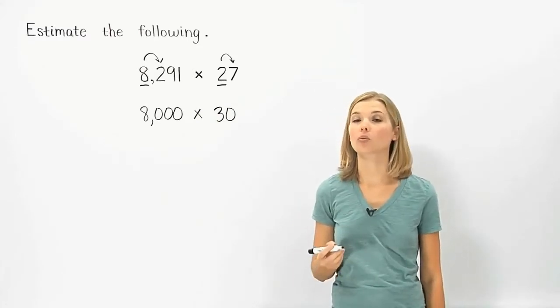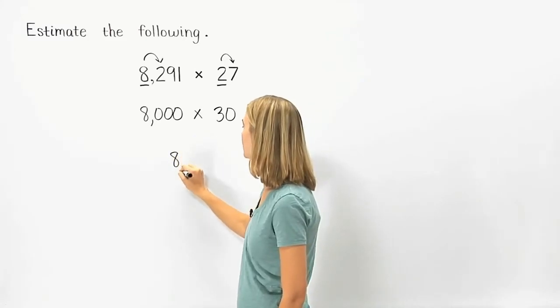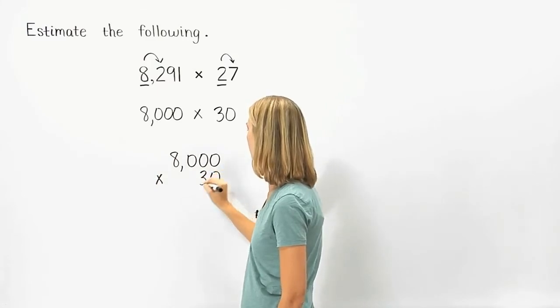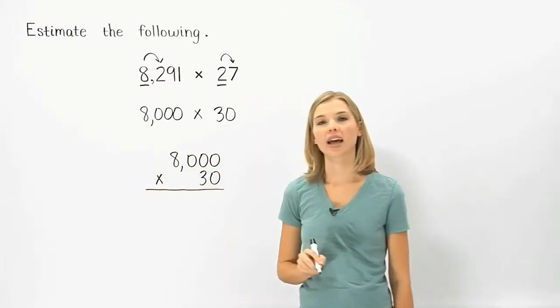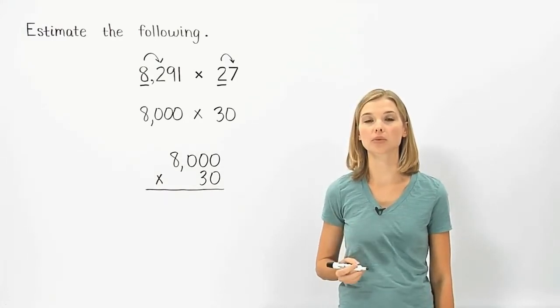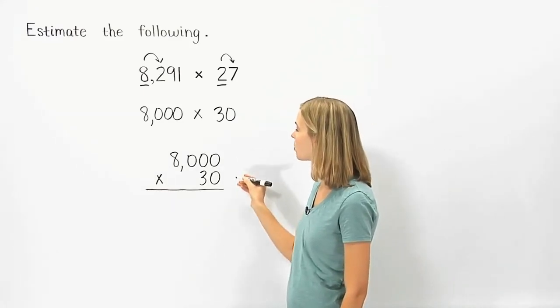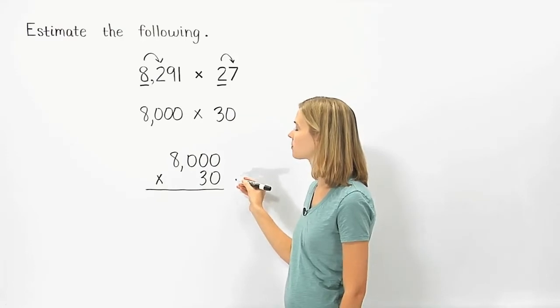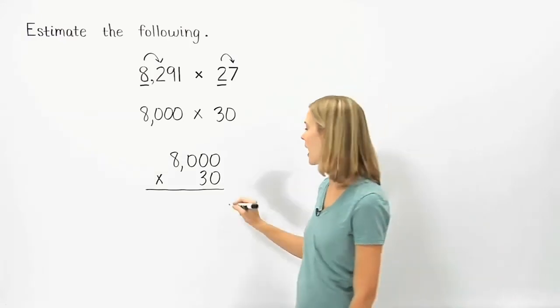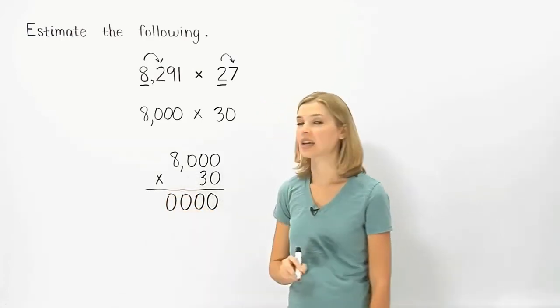Next, we line up the rounded numbers with the larger number on top and multiply: 8,000 times 30. An easy way to multiply numbers that end with zeros is to first count the total number of zeros at the end of the numbers. In this case, we have three zeros at the end of 8,000 and one zero at the end of 30. Since we have a total of four zeros at the end of the numbers, our answer will end with four zeros.